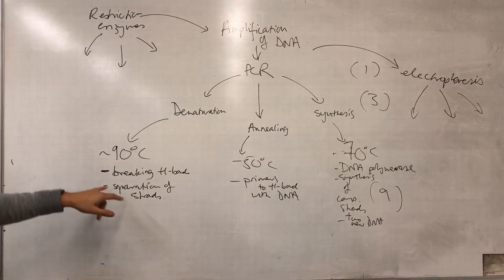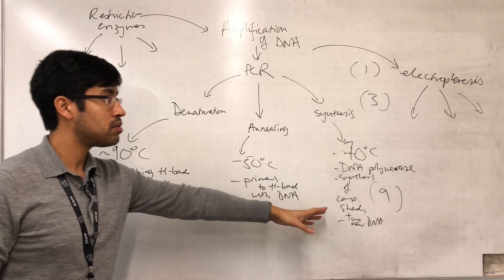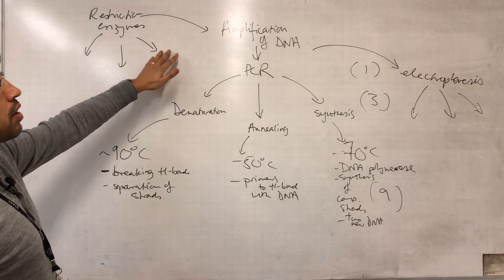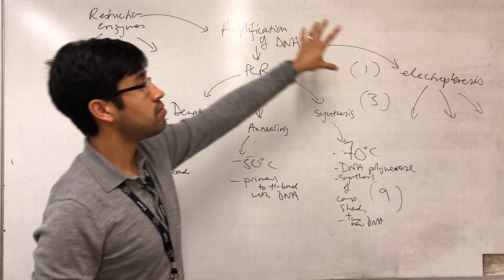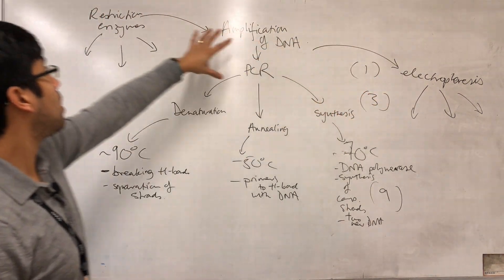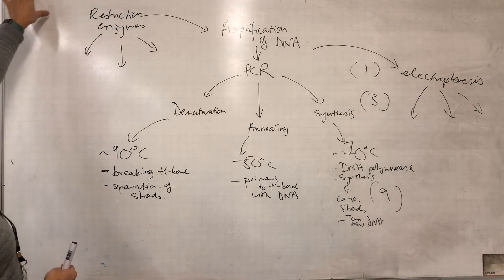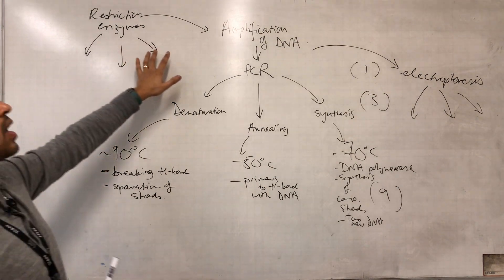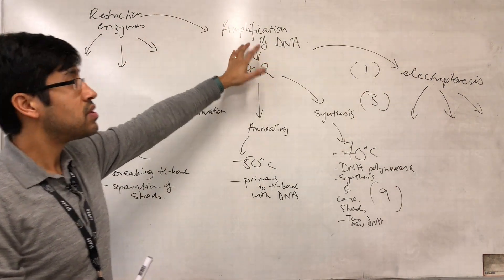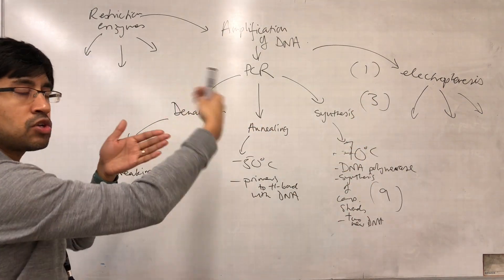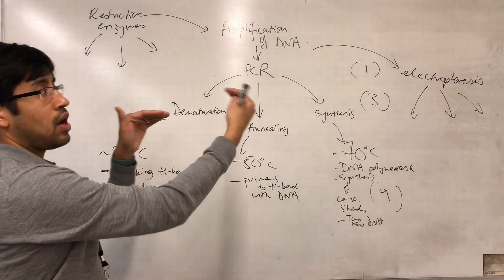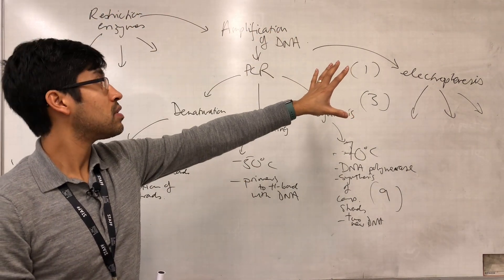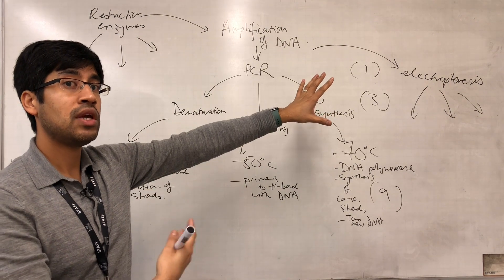So if you get like a five mark question on how to make a DNA profile, do you need to talk about the individual steps within PCR? No. What they're asking for is the top level of the tree where they're asking you about the extraction of DNA, restriction enzymes creating the fragments of that DNA, the amplification of the DNA, the electrophoresis, the visualization of the bands according to the different fragment sizes. That would be your five mark answer to how a DNA profile is produced.